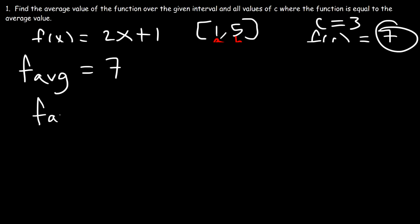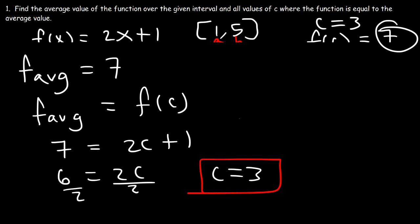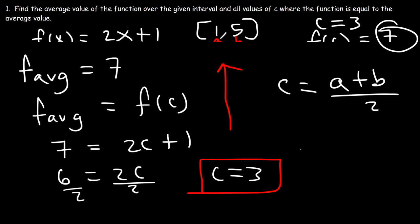Now let's set the average value equal to f of c. The average y value is 7, and f of c is 2c plus 1. Subtracting 1 from both sides gives 6, and dividing by 2 gives c equals 3. So for a linear function, c is the average of a and b, and the average value of the function is the average of f of a and f of b.